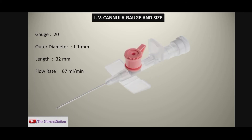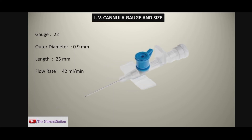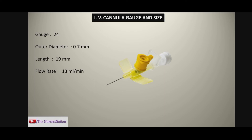Next is the pink colored cannula with a gauge size of 20, outer diameter of 1.1 mm, length of 32 mm, and a flow rate of 67 milliliters per minute. The blue colored cannula has a gauge size of 22, outer diameter of 0.9 mm, length of 25 mm, and a flow rate of 42 milliliters per minute. Then we have the yellow colored cannula with a gauge size of 24, outer diameter of 0.7 mm, length of 19 mm, and a flow rate of 13 ml per minute.